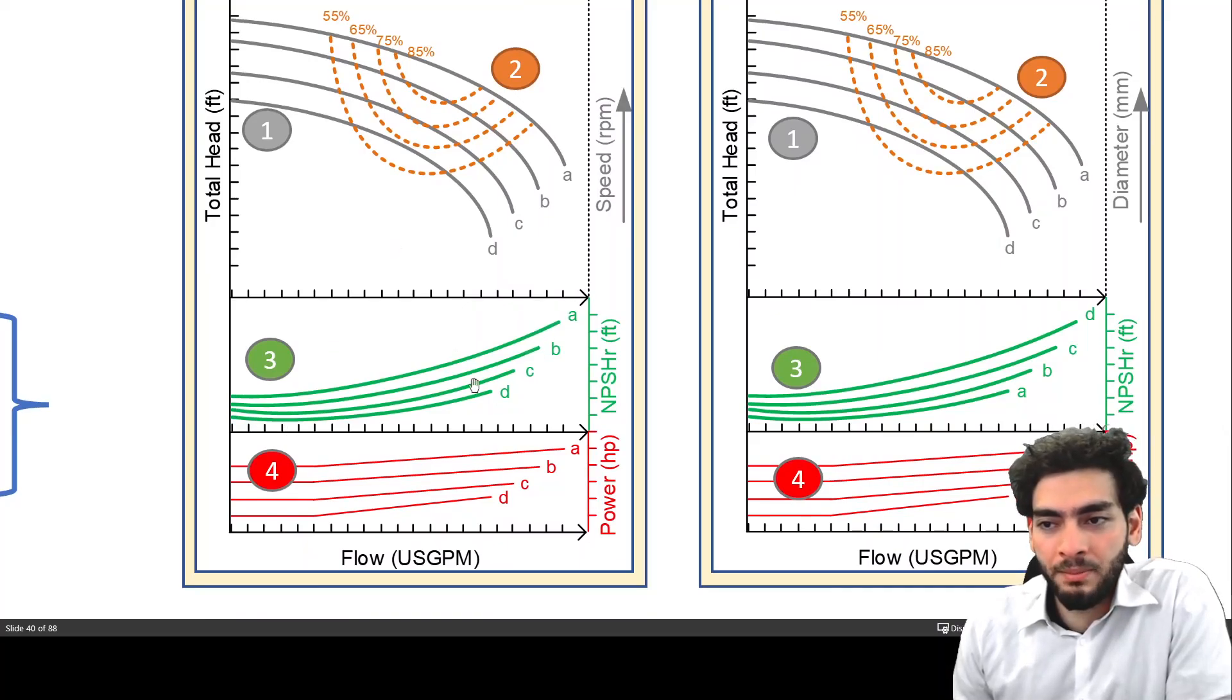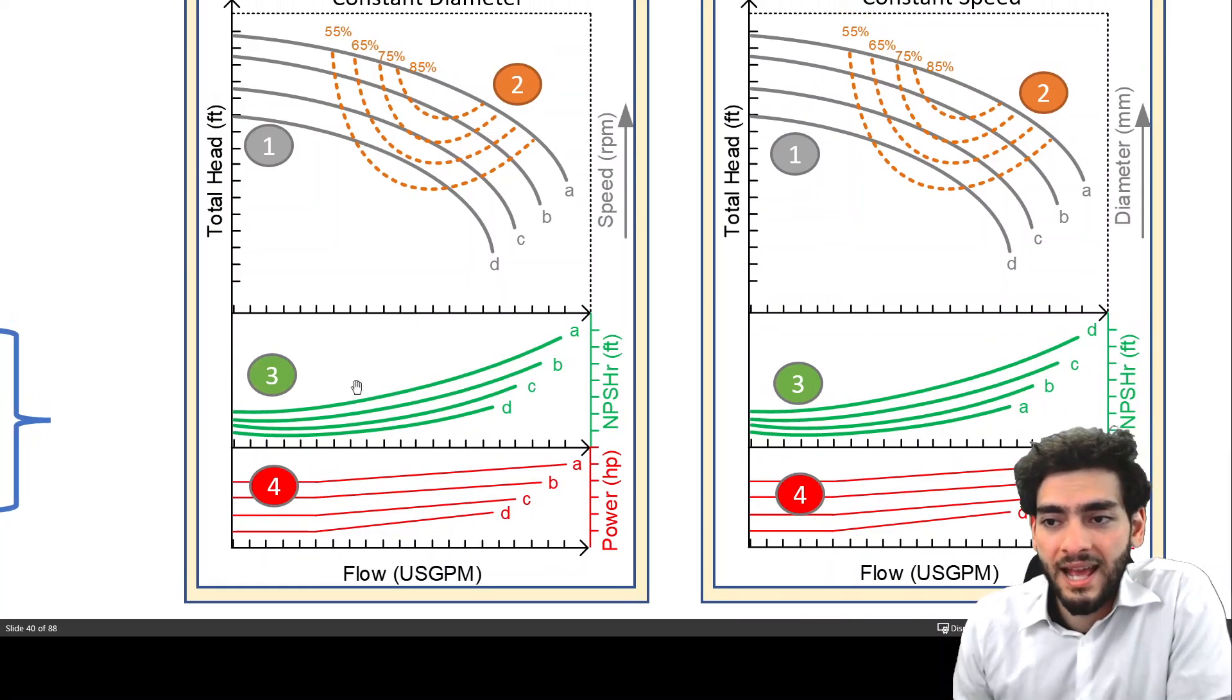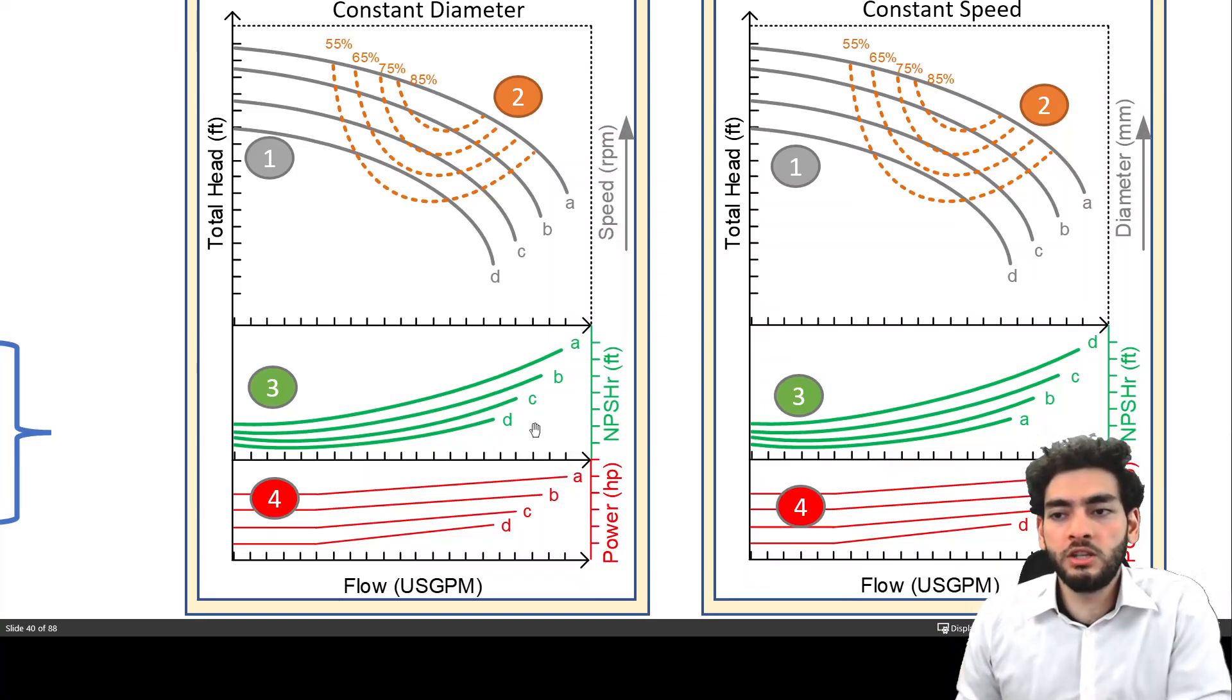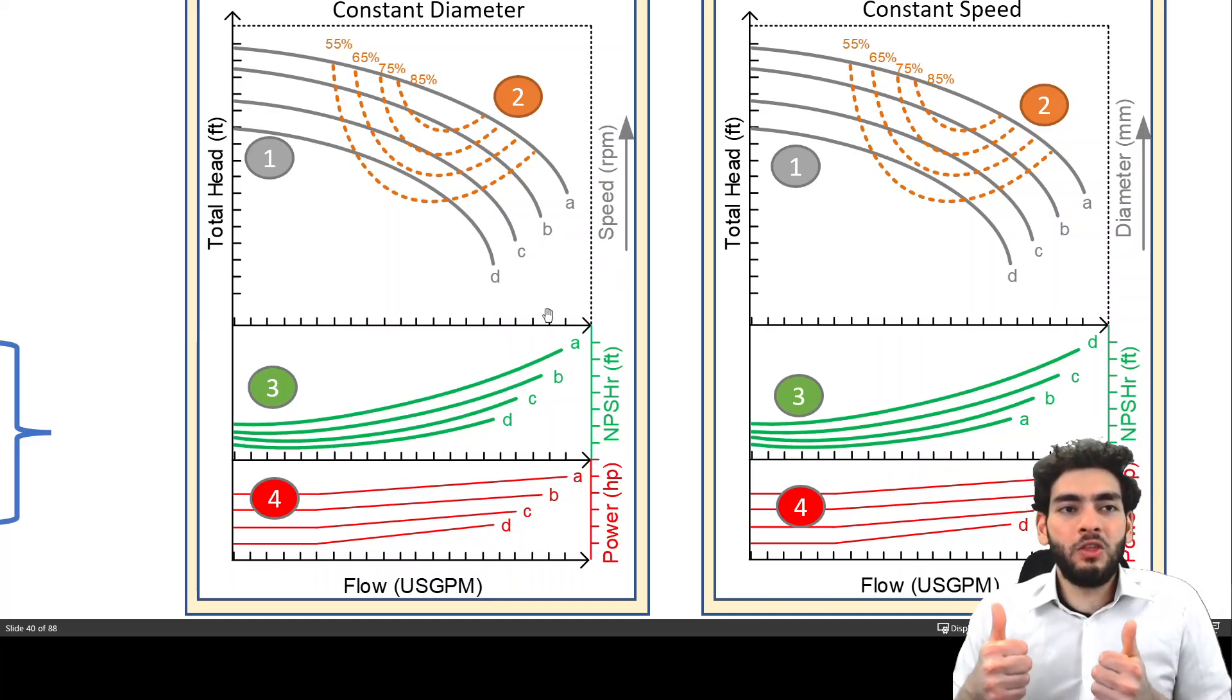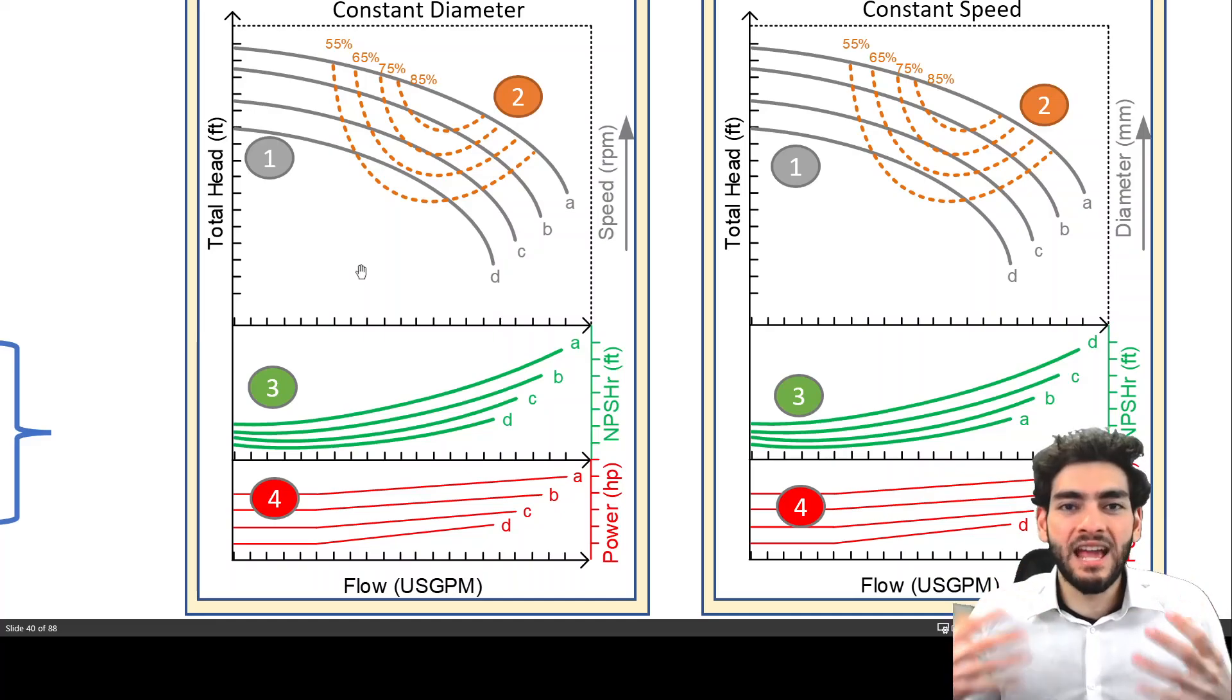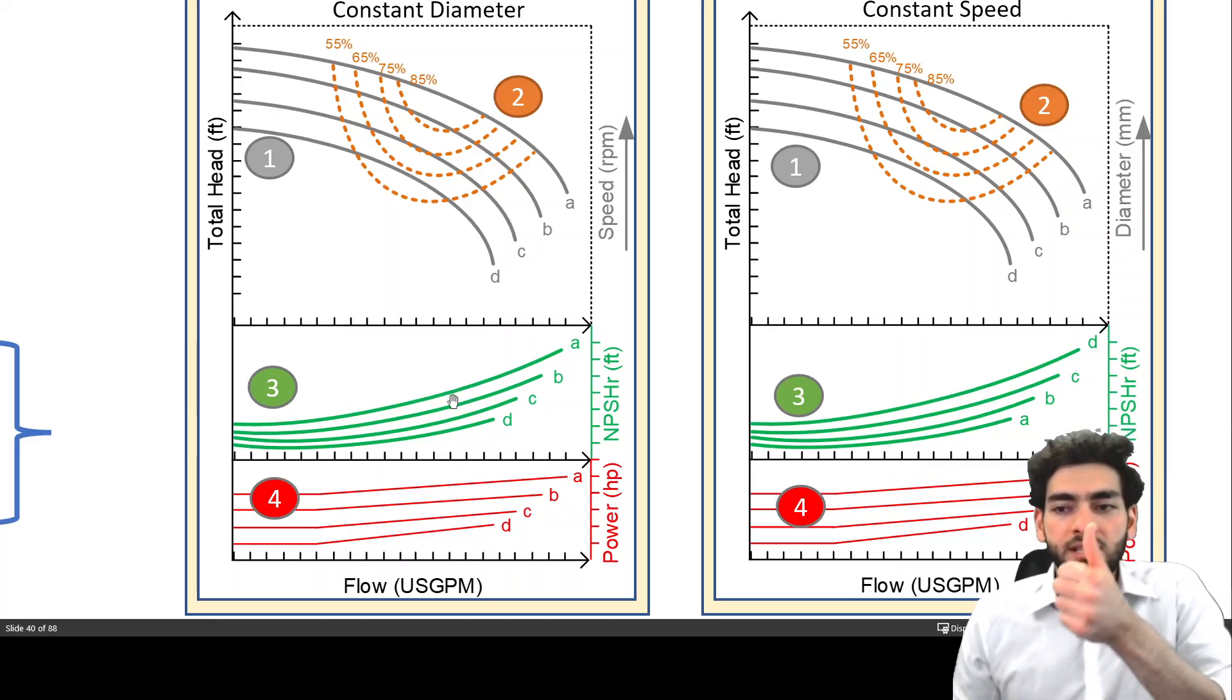They will also provide you with the NPSHR curves, which is the net positive suction head required curves. And as you could see, the NPSHR curve changes depending on what speed you're operating at. So as you increase the speed of the impeller, such that you have more head and more flow rate in your system, the NPSHR curve also shifts upwards as a result.